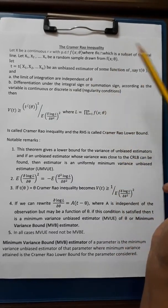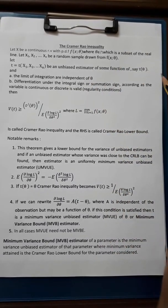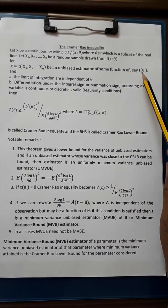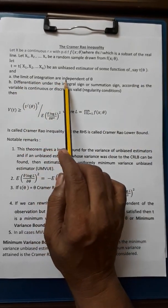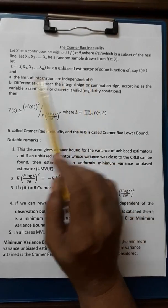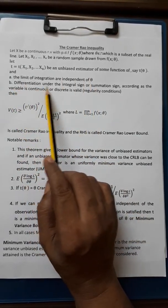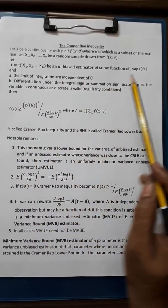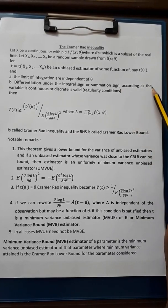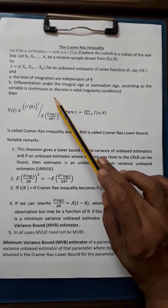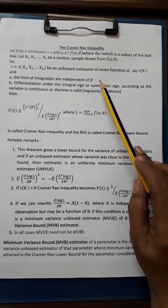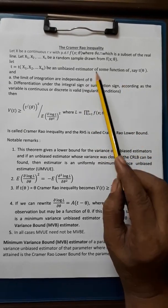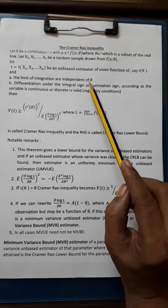Be an unbiased estimator of some function say τ(θ) and the limit of integration are independent of θ. The differentiation under the integral sign or summation sign according as the variable is continuous or discrete is valid. These two are called regularity conditions.